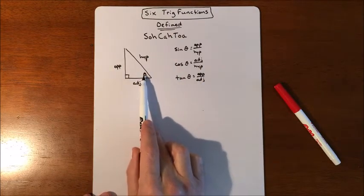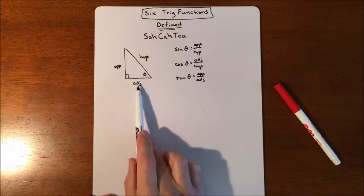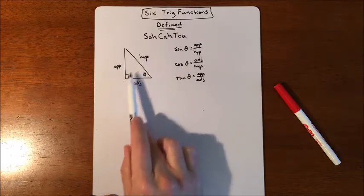So here's kind of our picture. If this is your angle, this is the opposite side, this is the adjacent side next to the angle, and hypotenuse is across from the 90.